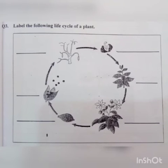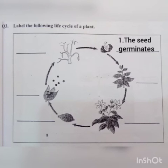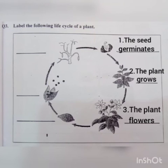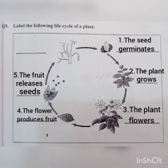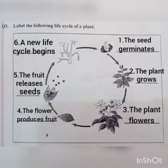Question number 3: Label the following life cycle of a plant. Number 1: The seed germinates — بیج اگنا شروع ہوتا ہے۔ Number 2: The plant grows — پودہ بڑھتا ہے۔ Number 3: The plant flowers — پودے پر پھول آتے ہیں۔ Number 4: The flower produces fruit — پھول پھل پیدا کرتا ہے۔ Number 5: The fruit releases seeds — پھل بیج دیتا ہے۔ Number 6: A new life cycle begins — زندگی کا نیا دورانیہ شروع ہوتا ہے۔